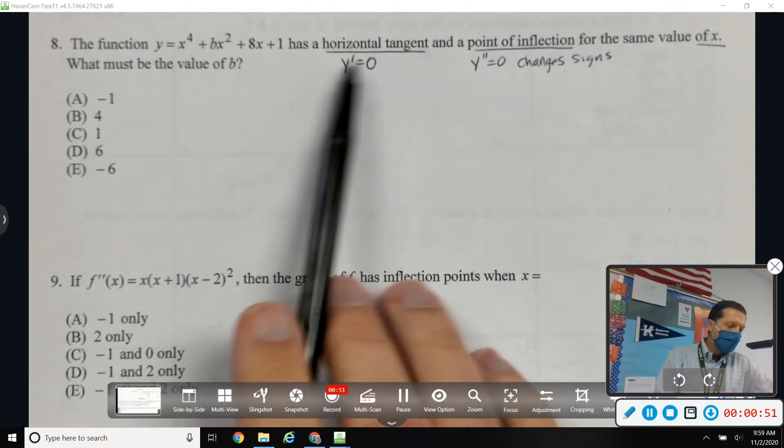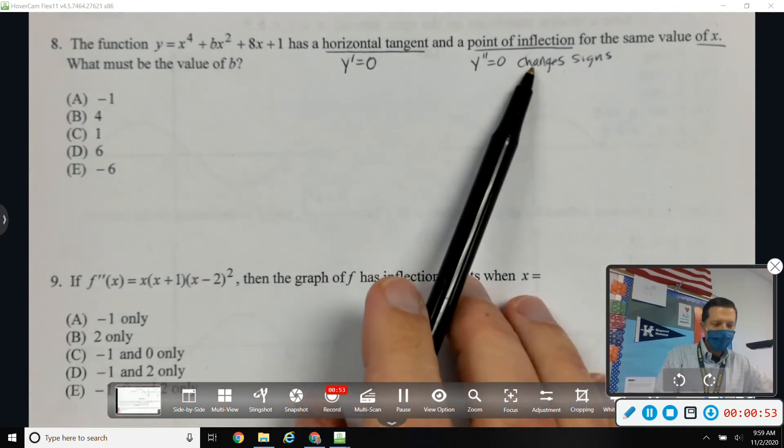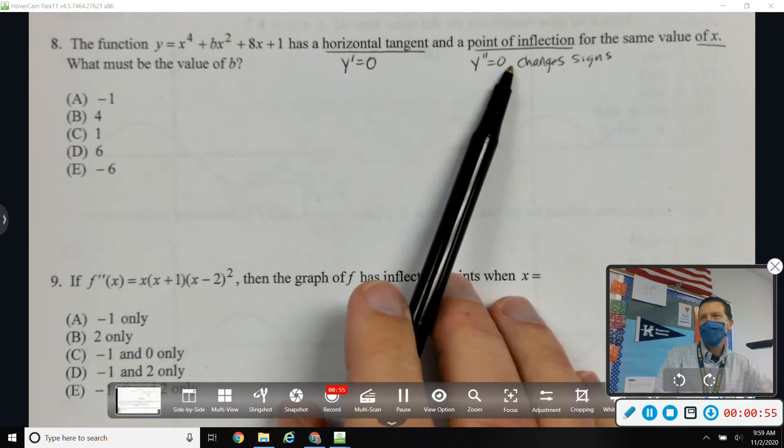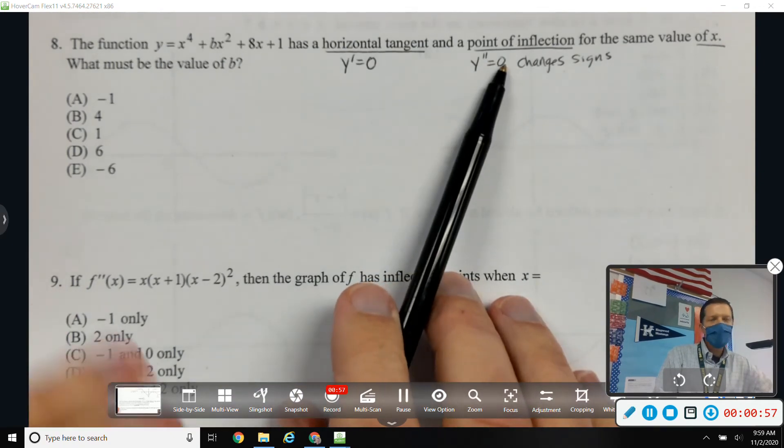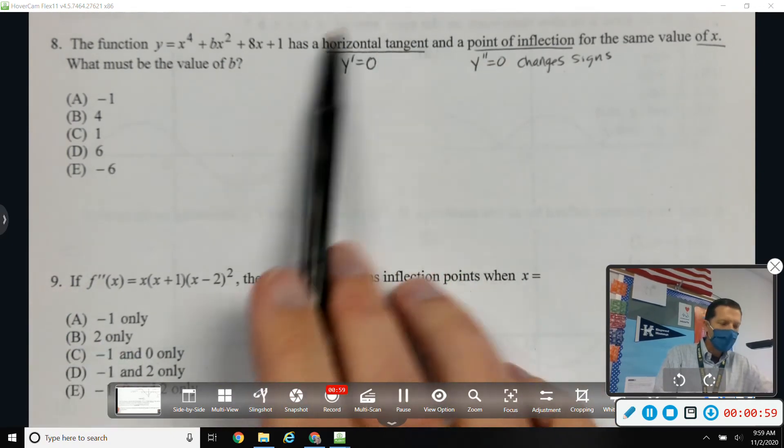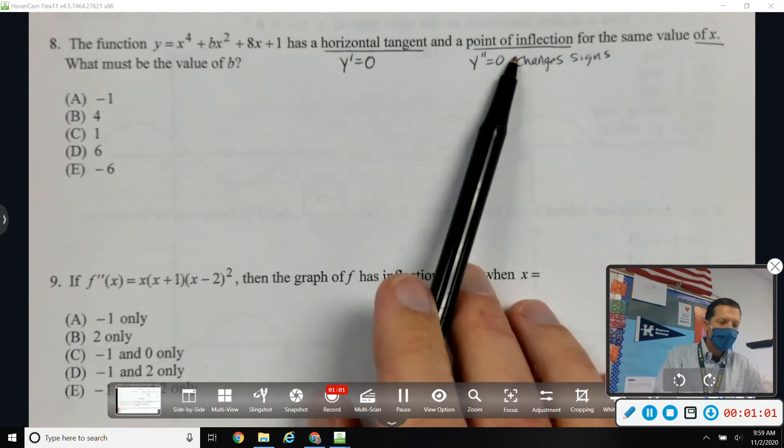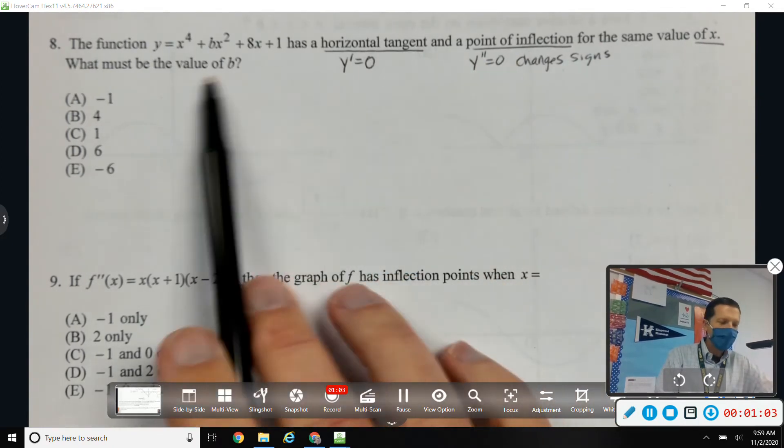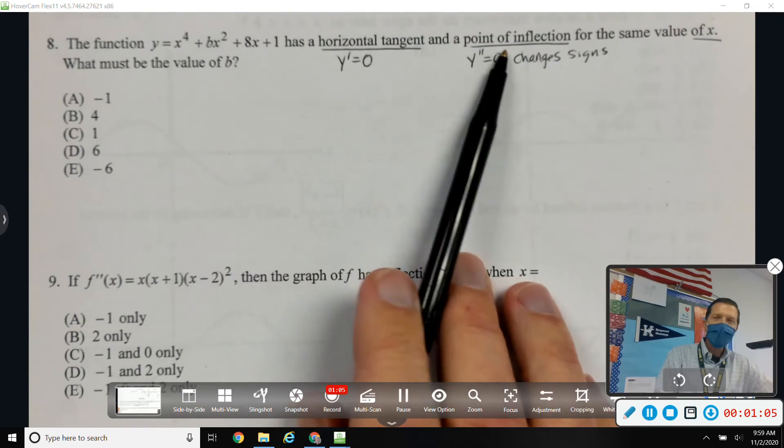By the way, that gets you maybe not quite half credit, but at least some partial credit. Not on the AP test, but in the test in here. If you wrote that out, if you made it that far, I would give you some credit, because now you've shown some calculus knowledge here.